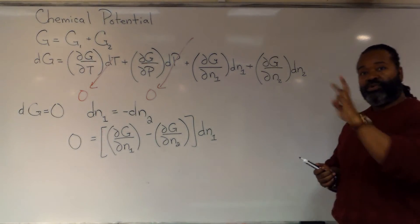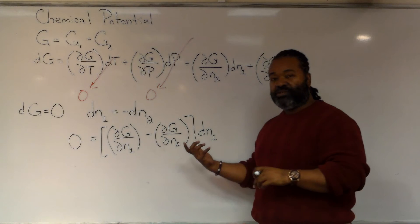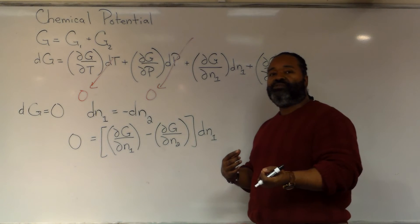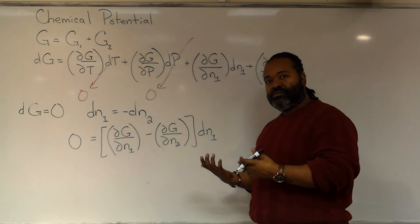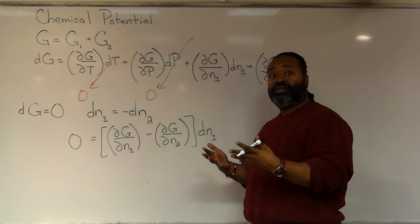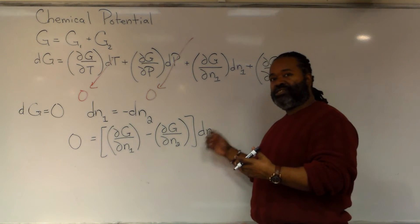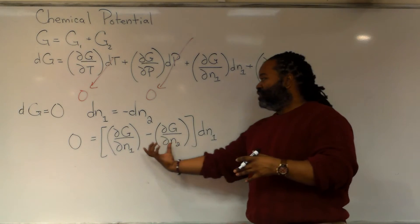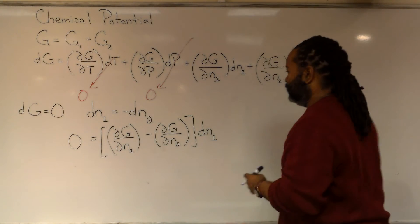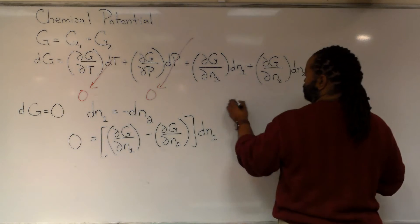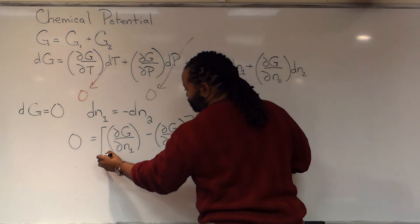Now at this point I have the product of two things being set equal to zero. One of these has to be zero and the other one can be some number. Clearly the number of moles changing is a non-zero quantity. So this has to be the part that we set equal to zero.